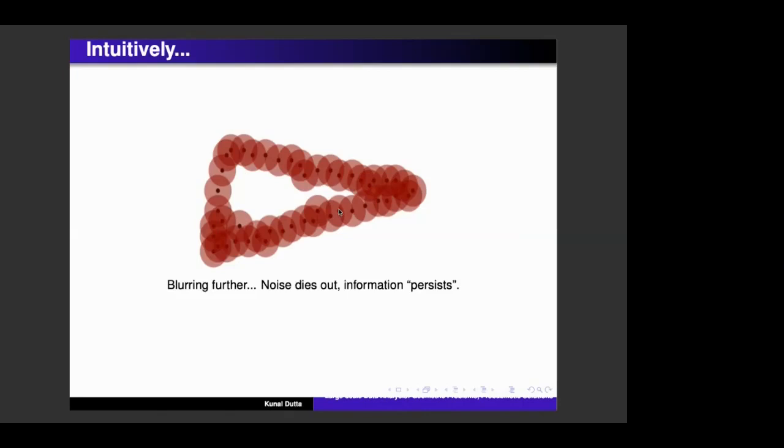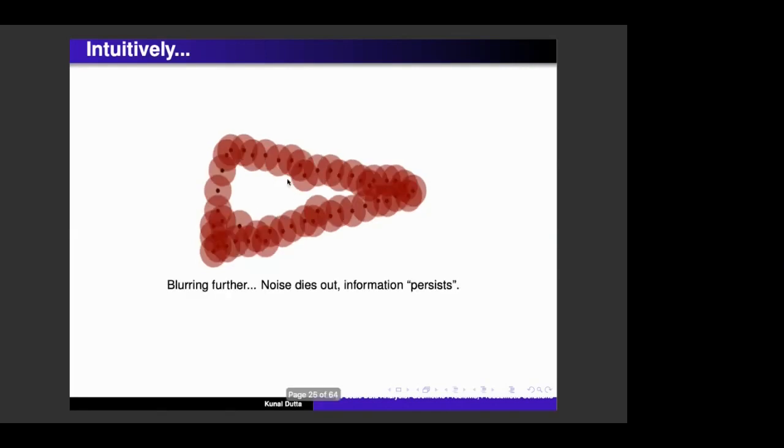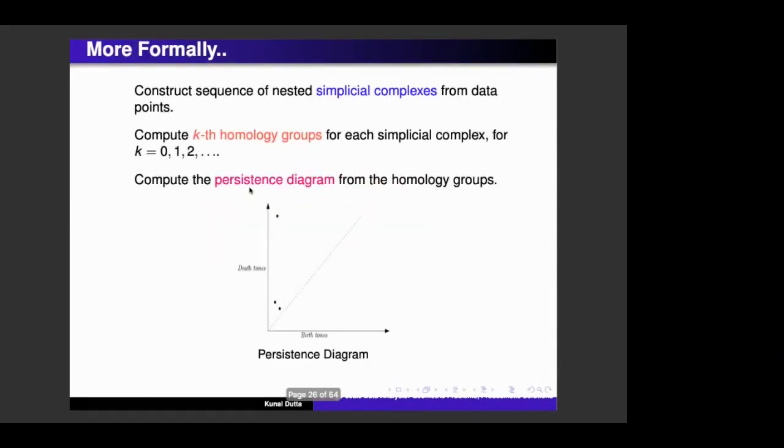So the idea is that the small holes represent noise in some sense. And the large hole is the information which you want to extract. So by large here, I mean the hole that persists as you increase the radius. So more formally, you can construct the sequence of nested simplicial complexes and compute the k-th homology groups for each simplicial complex. And then you can compute the persistence diagram from the homology groups.